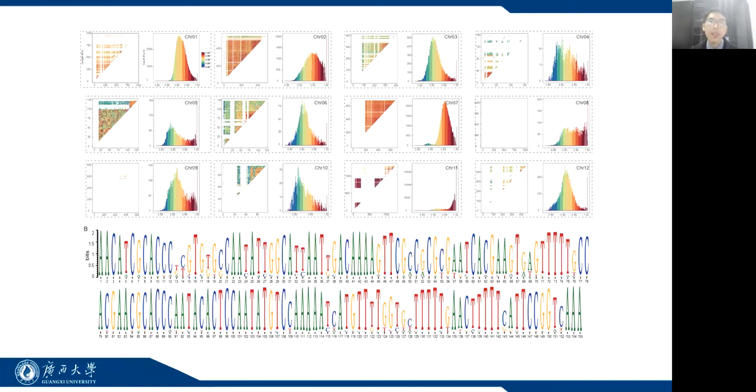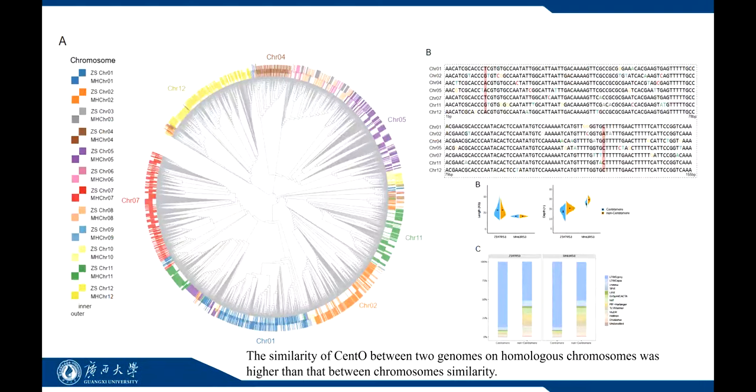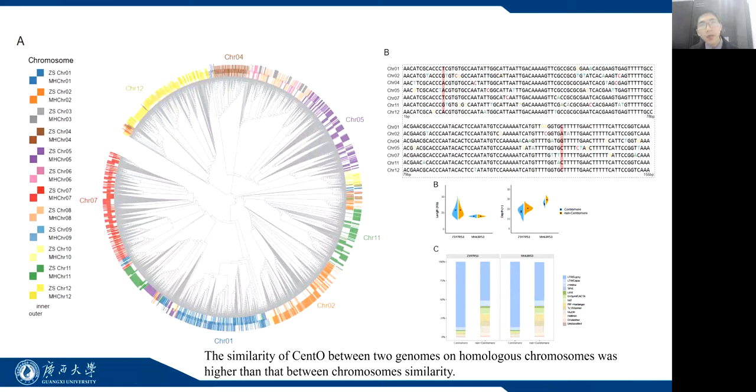Meanwhile, motif analysis of CentO sequences revealed conservation of rice centromeres at the genome level. The similarity of CentO between two genomes and homologous chromosomes is higher than that between chromosomes, supporting a model of repeated expansion events related to centromere domains and locus homogenization.